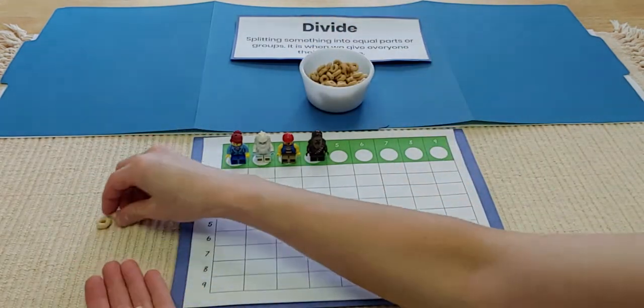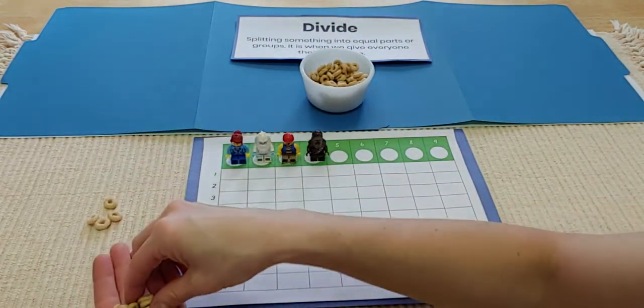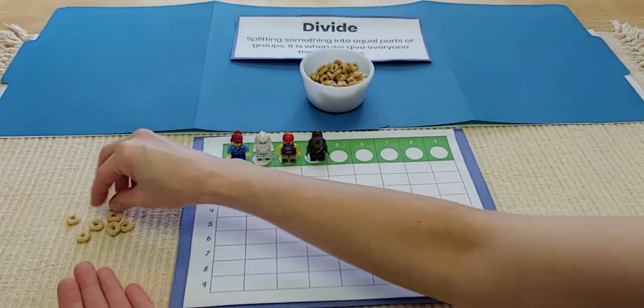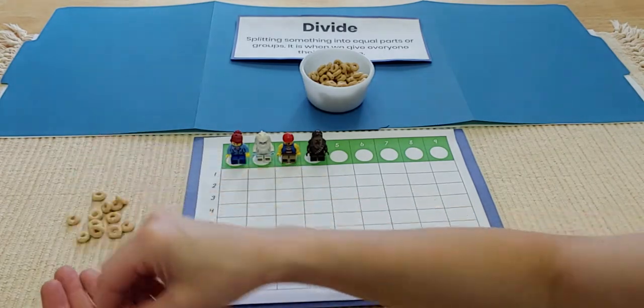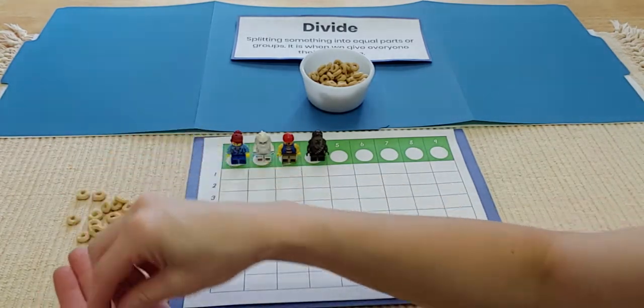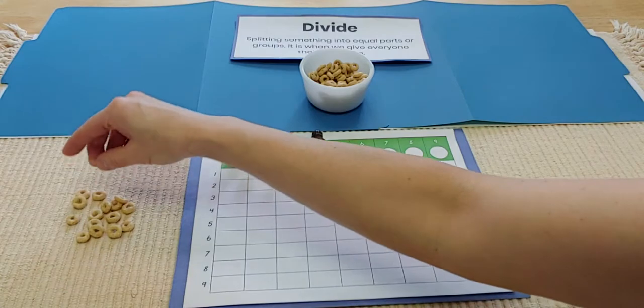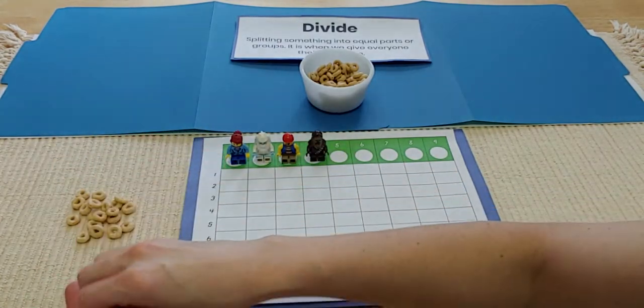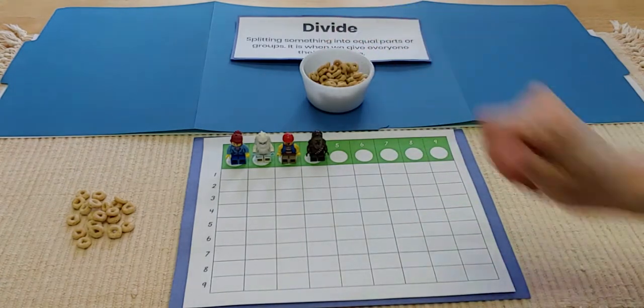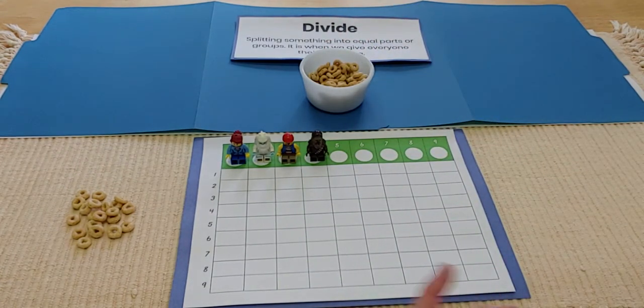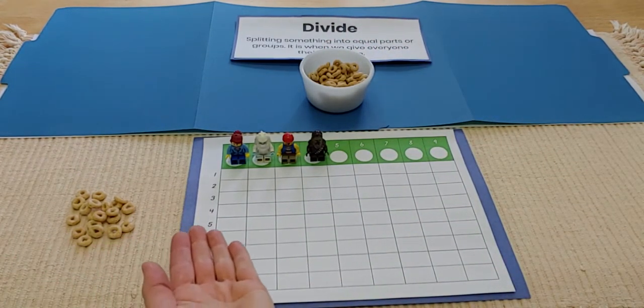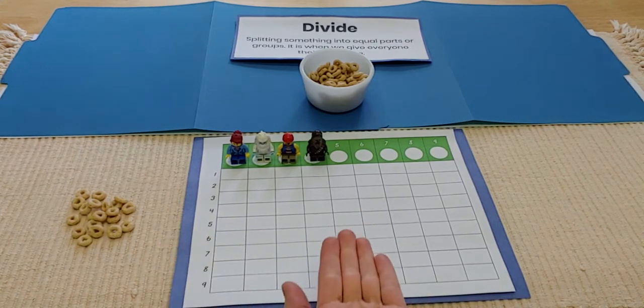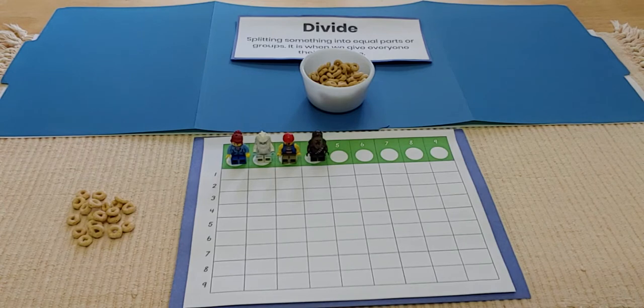1, 2, 3, 4, 5, 6, 7, 8, 9, 10, 11, 12, 13, 14, 15, 16, 17, 18, 19, 20. Okay. Now I have my 20 Cheerios and I'm going to see if I can share these Cheerios equally among my friends. Let's see if this is going to work, shall we?